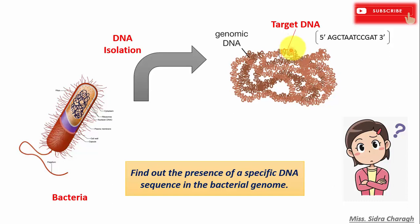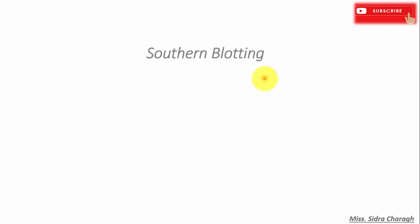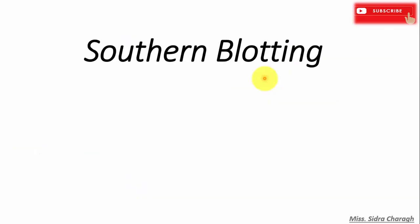Let's say this red region in this DNA is representing the target sequence and the nucleotide sequence of this DNA is in 5 prime to 3 prime direction. Now the problem we have to solve here is how we can detect and confirm the presence of this target sequence in the total bacterial genome. So the answer is Southern blotting.